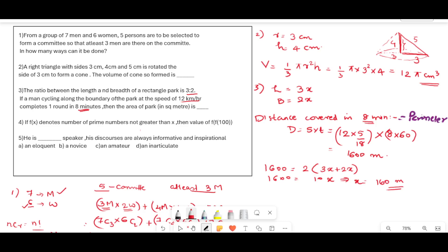Now what is to be found? The area of the park. Area is length into breadth. Length is 3 times 160 and breadth is 2 times 160. This is equal to 480 meters and 320 meters. Now we can find the area. Area is equal to length into breadth, 480 into 320, and that is equal to 153,600 meter square.